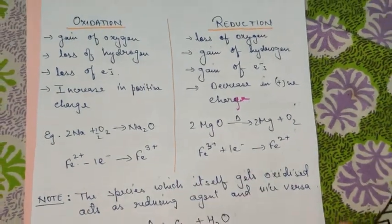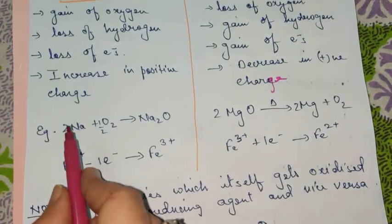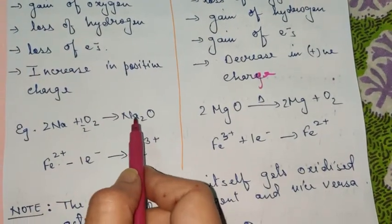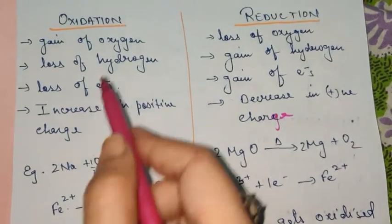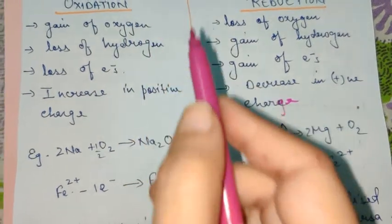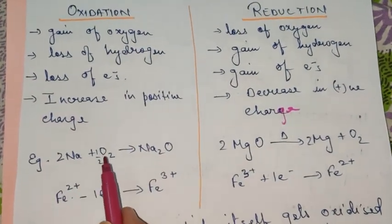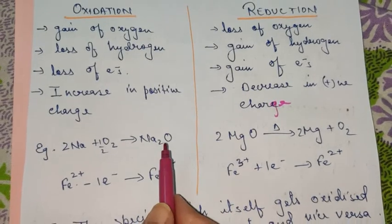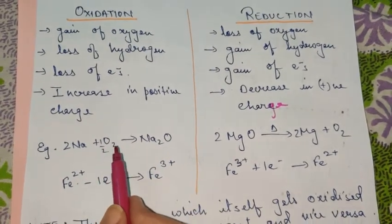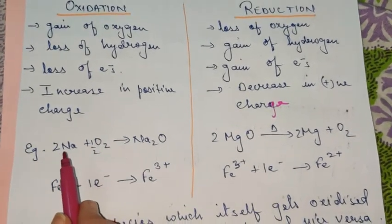To illustrate this in a better way, I have taken some simple examples. As you can see here, NO plus oxygen is getting converted into NO2. This correlates with the first point — gain of oxygen. Sodium is gaining oxygen and getting converted into sodium oxide. So gain of oxygen means oxidation is occurring.